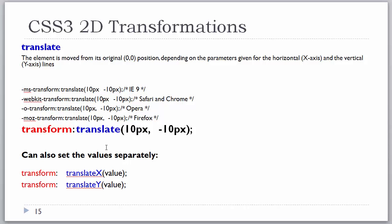The translate function is a value of the transform property and it takes two parameters: the horizontal position and the vertical position. We are moving the object from its original position on the x-axis and the y-axis. The translate value works with the original 0,0 position — every object's upper-left corner forms the xy-axis at 0,0. Translate is essentially moving it from its original location. You can also set the values separately with translateX() and translateY(). Remember, this is all the transform property.